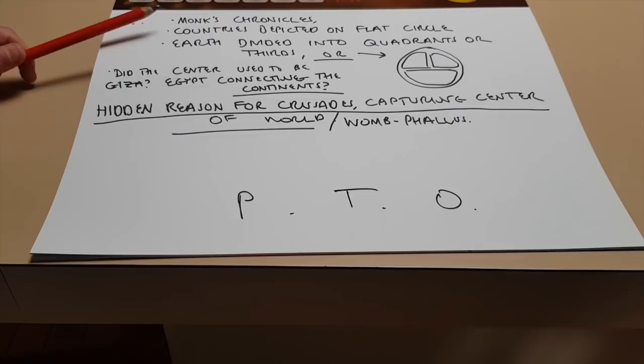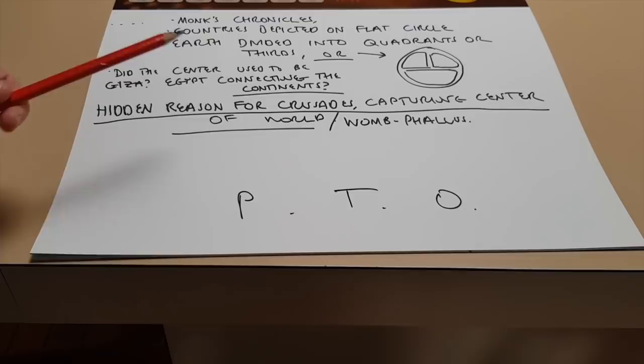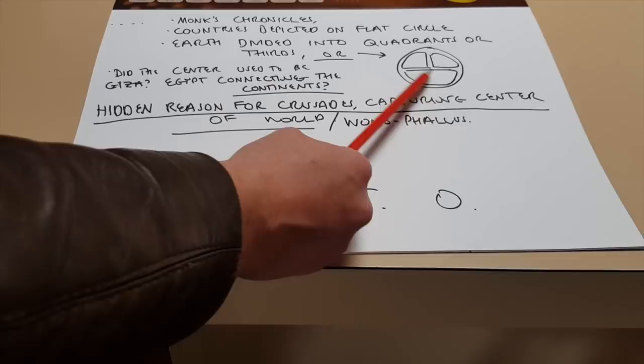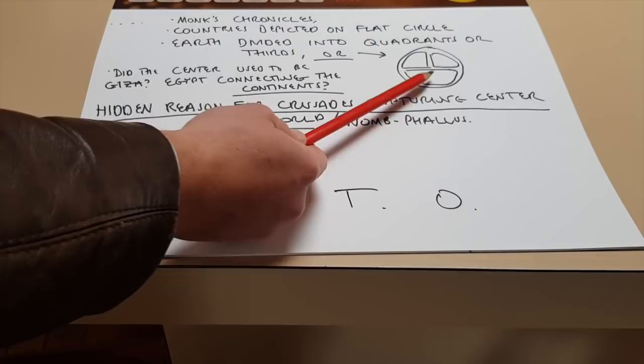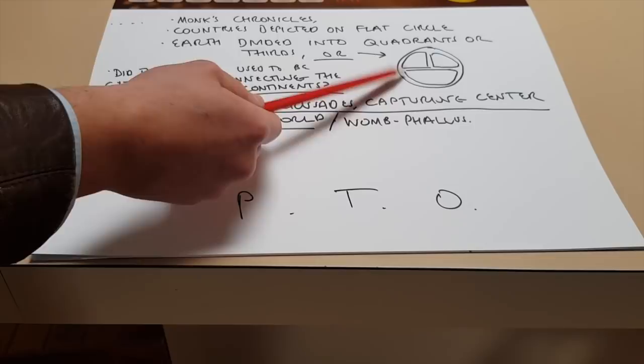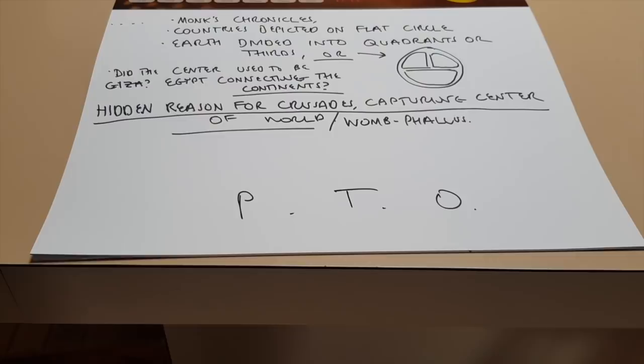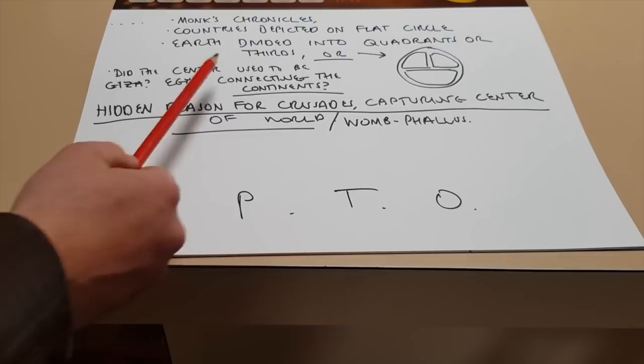In addition, so these are found in monks chronicles. Countries are depicted on a flat circle. Earth is divided into quadrants or thirds. Sometimes it's like this. So that's Asia, Europe, Africa, Asia being bigger. So that's how they show that it's bigger. It's like two continents in size. So they thought, Oh, this must be true because it's too perfect not to be true. The same reason we love relativity because it's so perfect or love any theory because it's so perfect. So they couldn't get rid of this theory. So did the center used to be Giza? That's what I'm asking you because Egypt is a kind of connection between the continents.